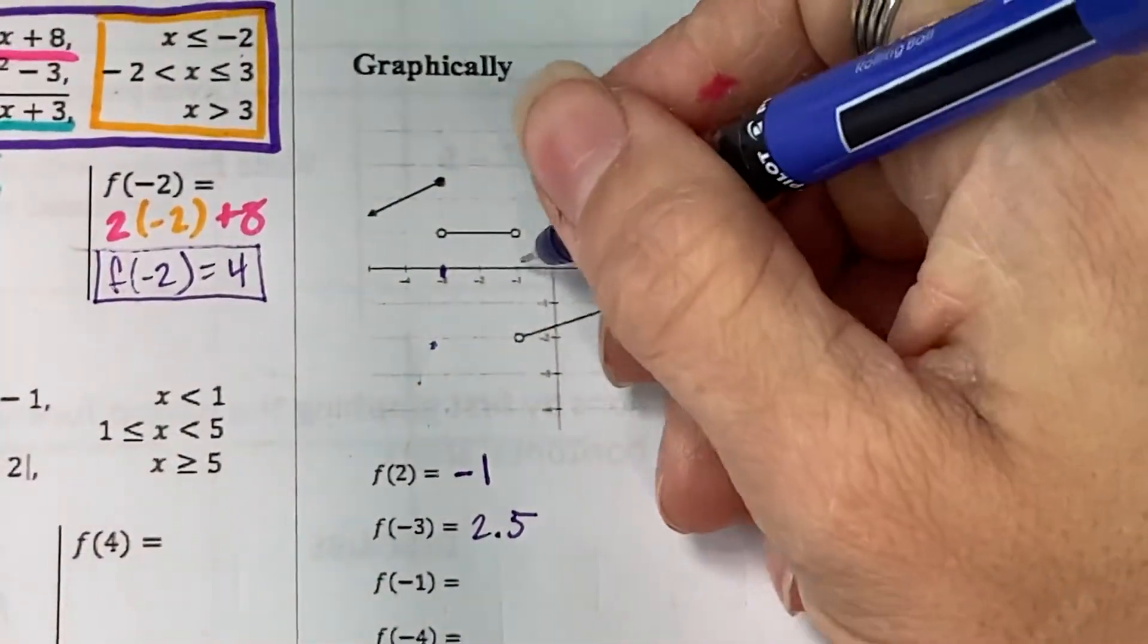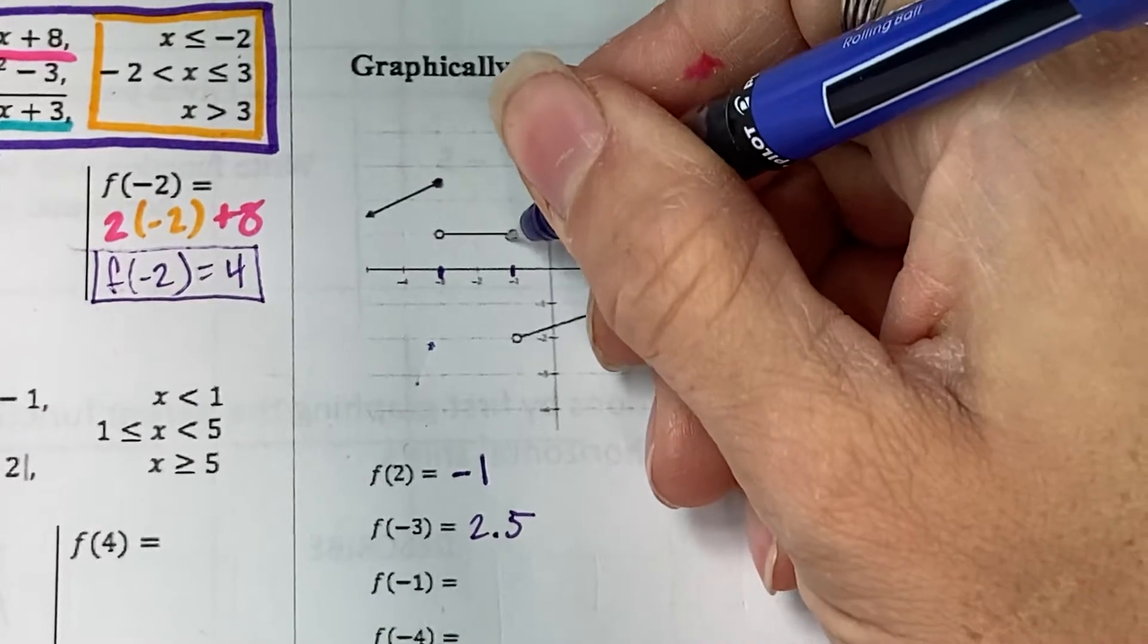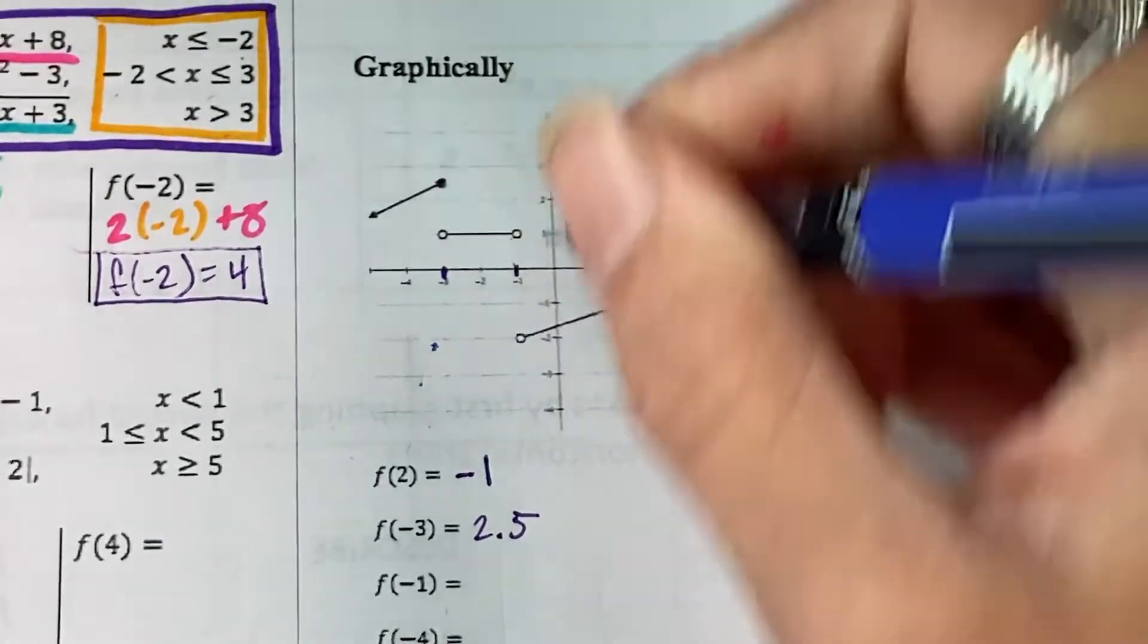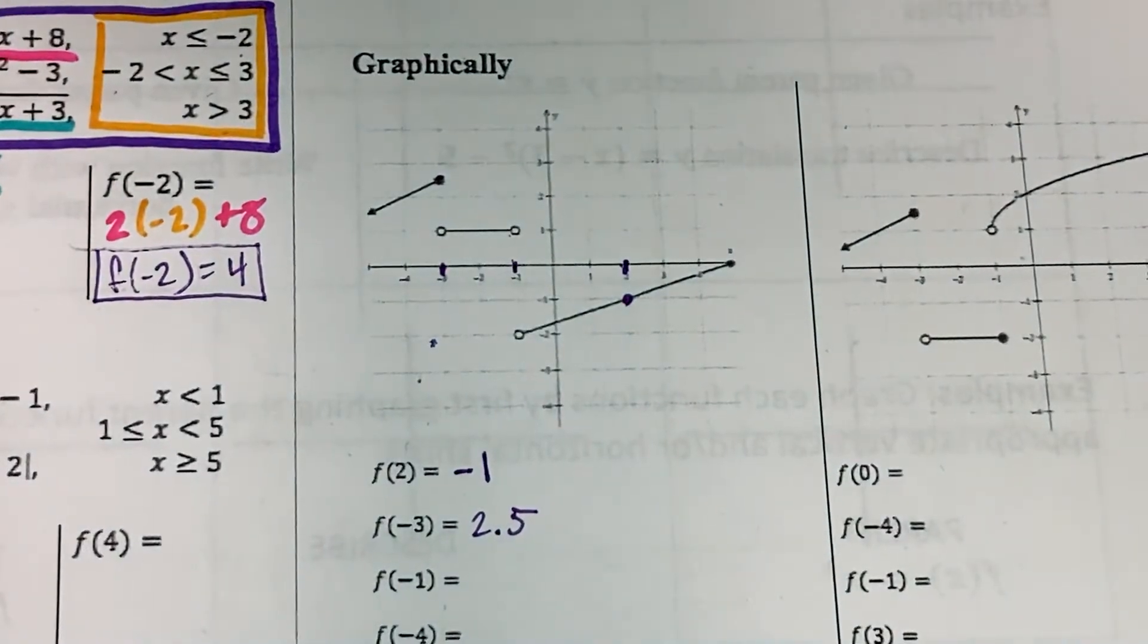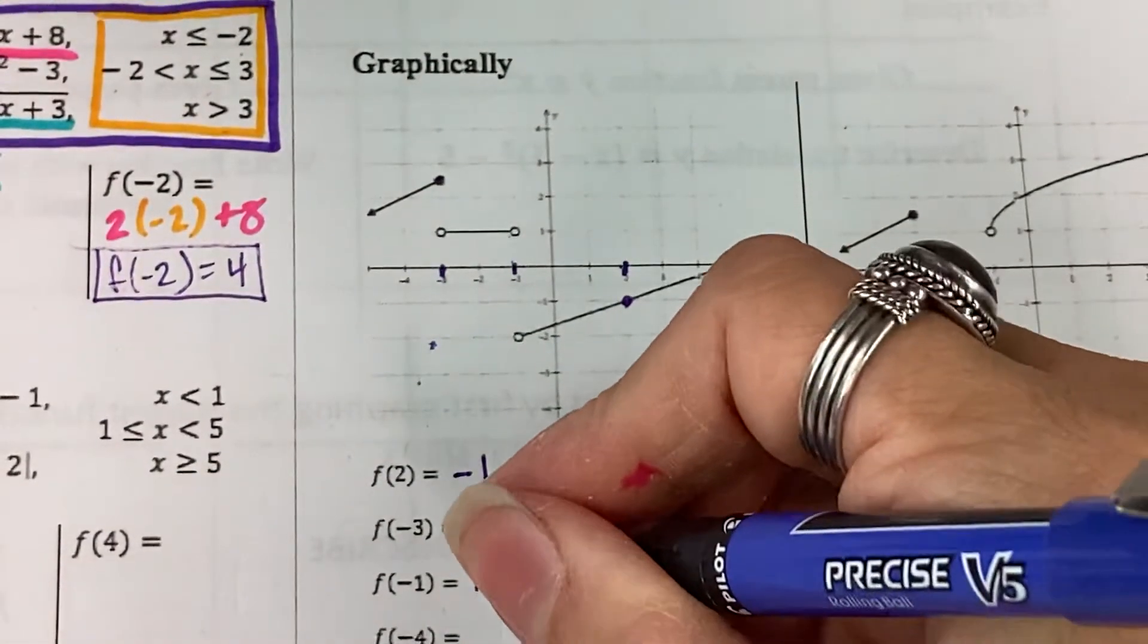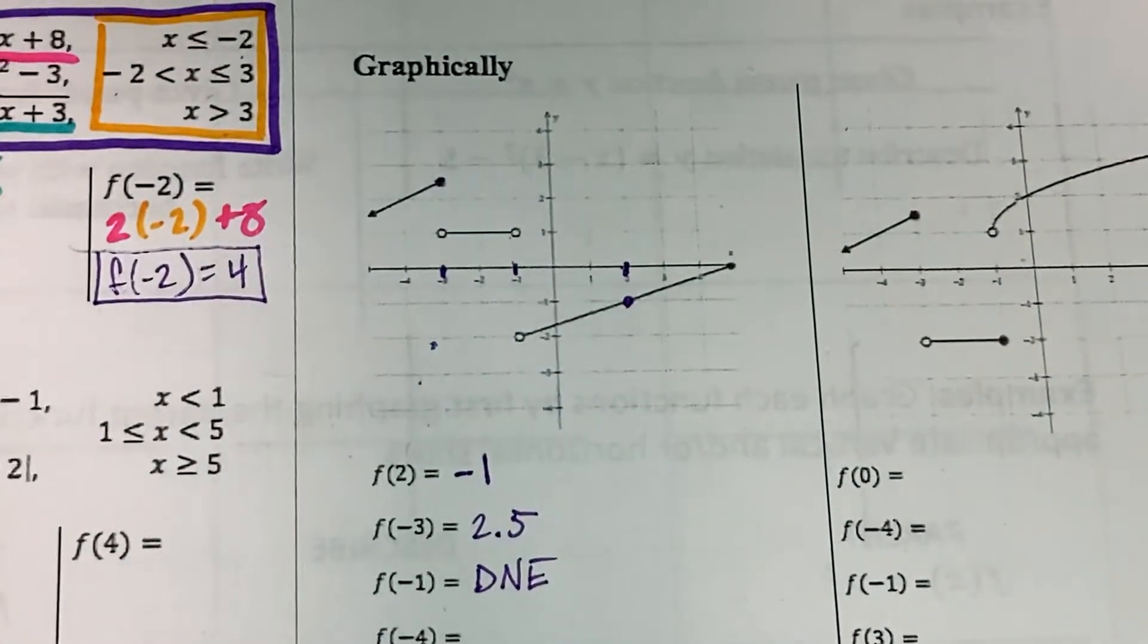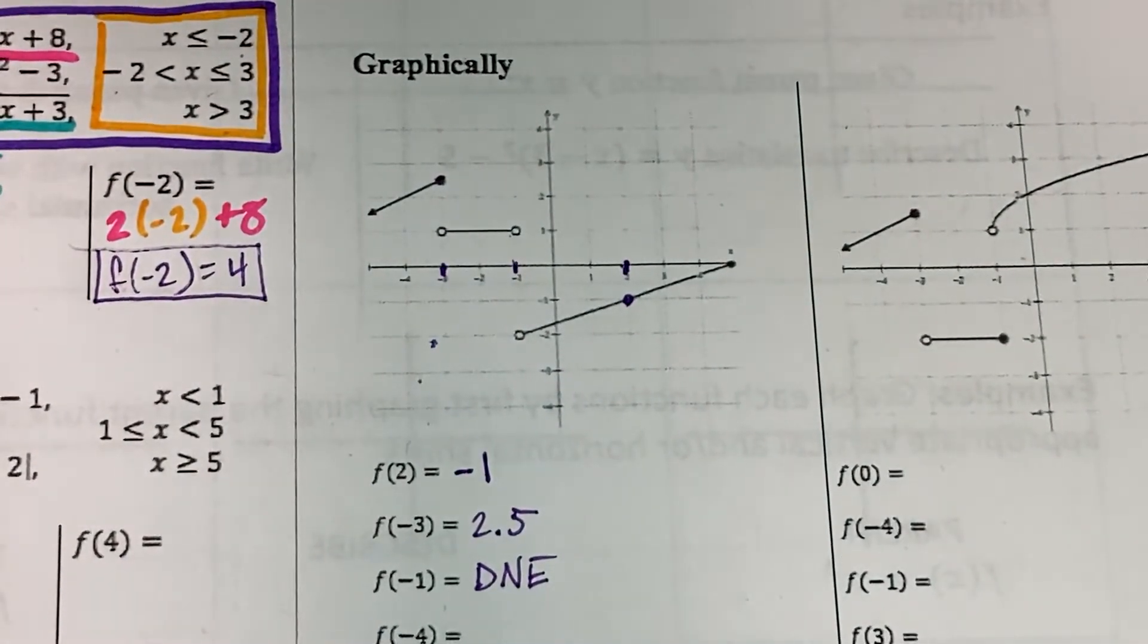At f of negative 1, we plug that in for an input. I'm not defined at that open dot. I'm also not defined at that other open dot. So, what do we say about f of negative 1? We say, DNE, it does not exist. So, our function is not defined at that input.